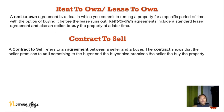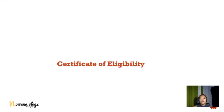Contract to sell refers to an agreement between a seller and a buyer where the seller promises to sell something to the buyer and the buyer promises to buy the property. This will be given from the developer's side — if you purchase a property from a developer, the contract to sell is typically issued one to three months after you purchase the property.